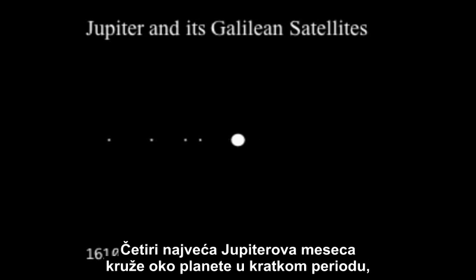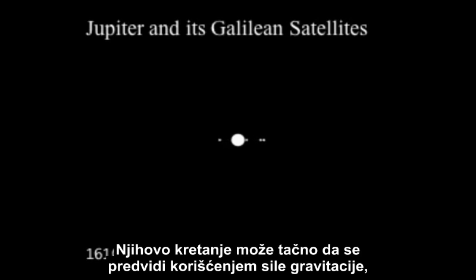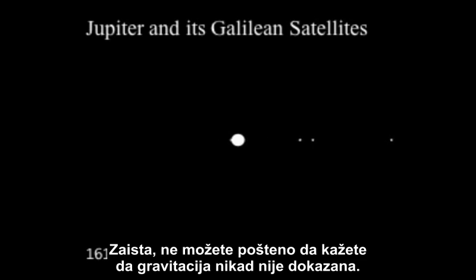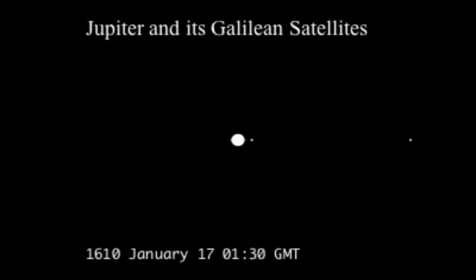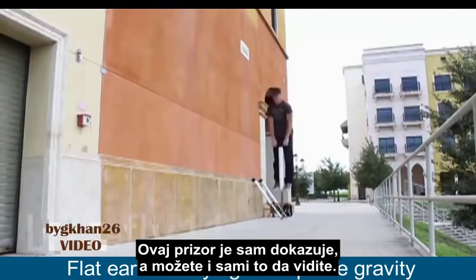The four biggest moons of Jupiter orbit the planet in a short amount of time, and you can actually see their movements within a single night. Their movements are exactly predicted by the force of gravity, the same force that keeps our Moon in orbit around the Earth. You really cannot honestly say gravity has never been proven — this sight alone proves it, and you can see it for yourself.